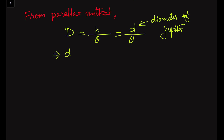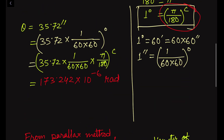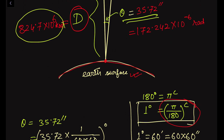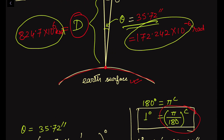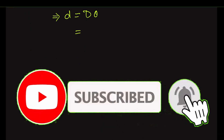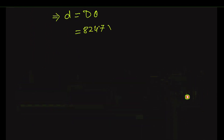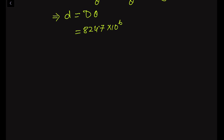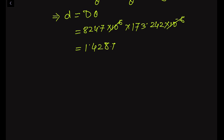So small d equals capital D multiplied by theta. Capital D is 824.7 × 10⁶ kilometers, and theta is 173.242 × 10⁻⁶ radians. The 10⁶ and 10⁻⁶ cancel out, and after multiplication we get a value of 1.4287 × 10⁵ kilometers. This is the diameter of Jupiter.